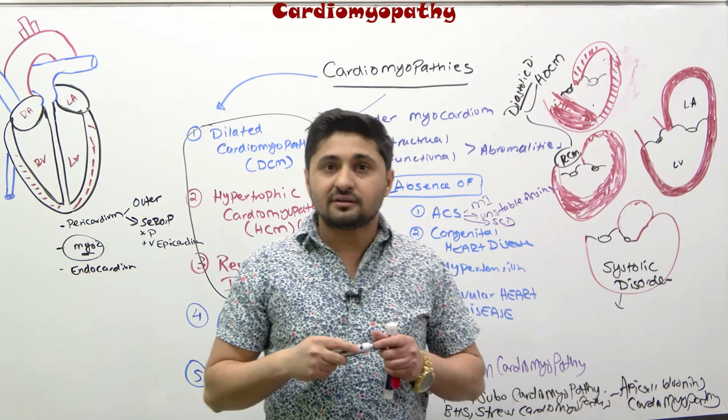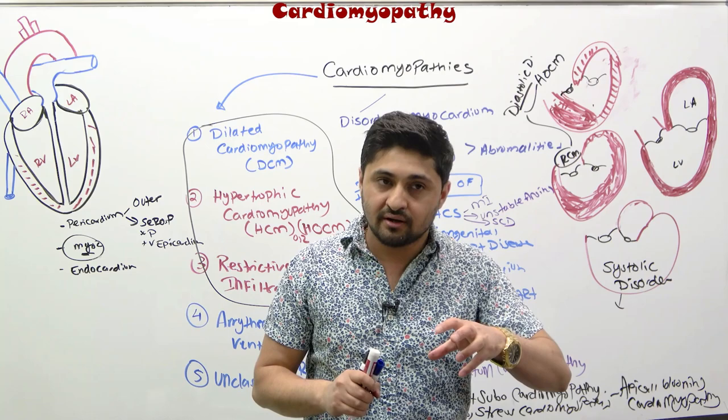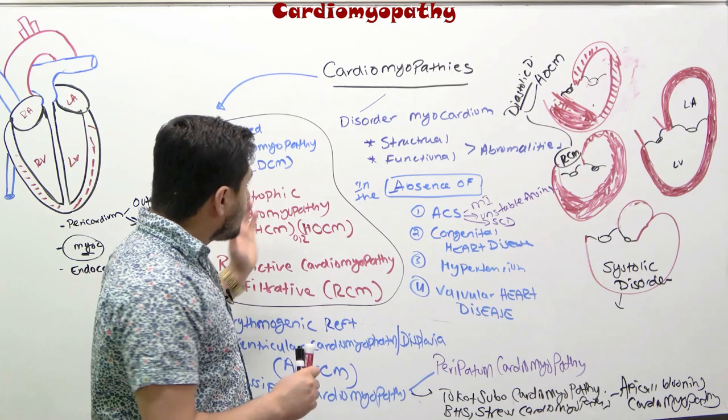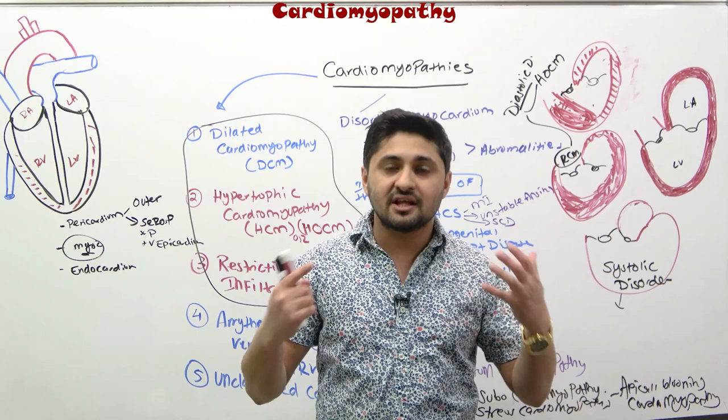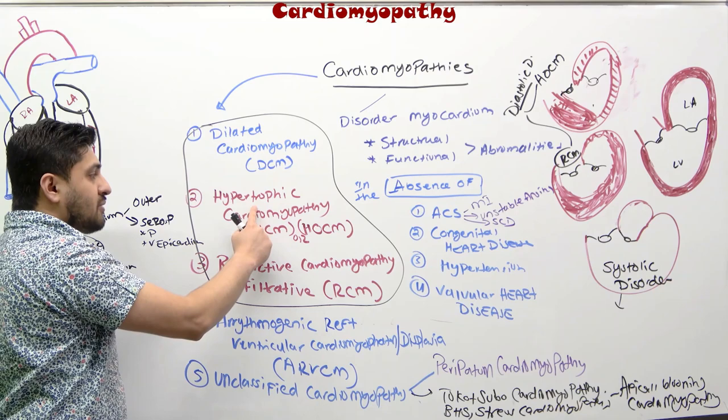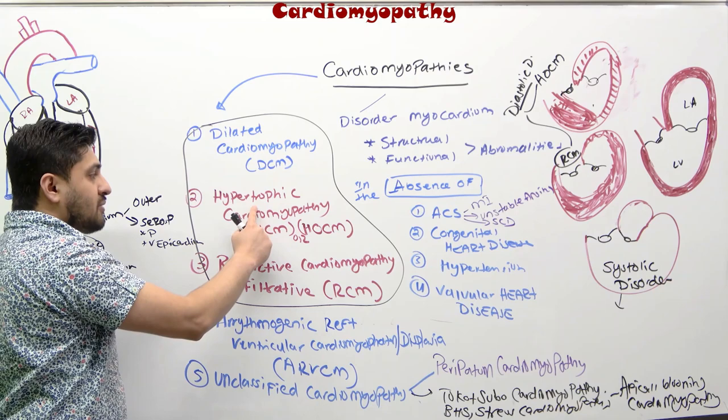These disorders frequently also have a genetic component, which results in cardiac myocytes becoming dysfunctional. After this introduction to cardiomyopathies, the next lectures will focus on each disorder individually: dilated cardiomyopathy, then hypertrophic cardiomyopathy, then restrictive cardiomyopathy. Thank you.